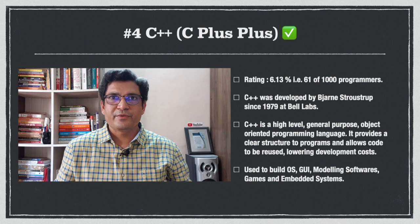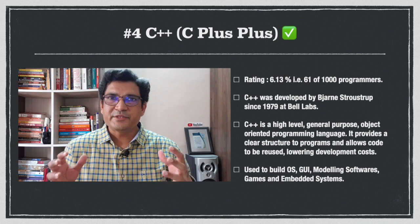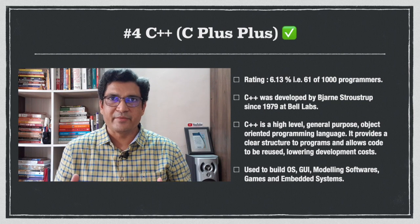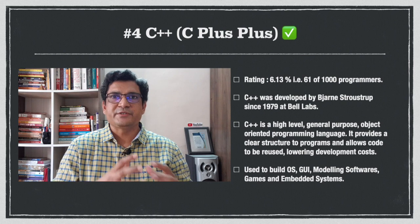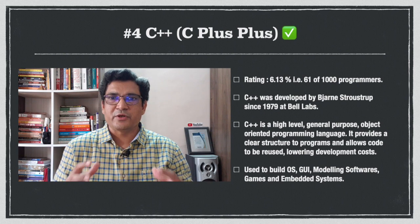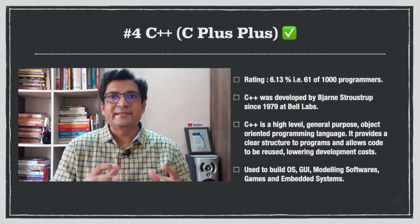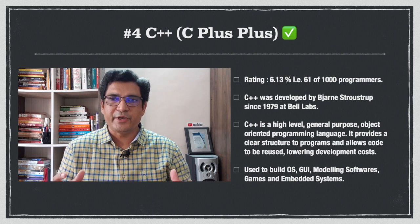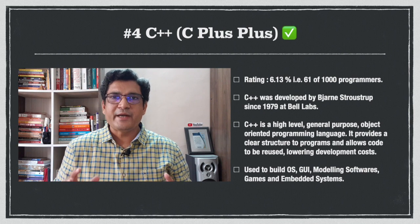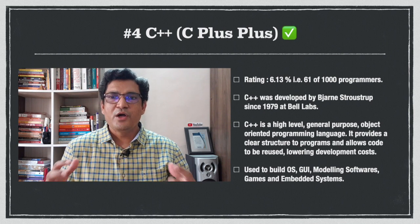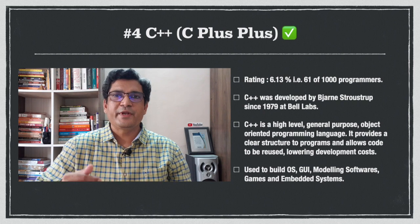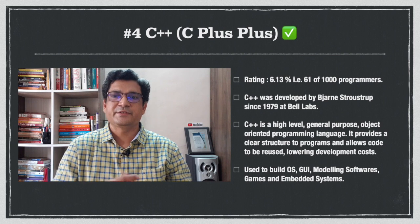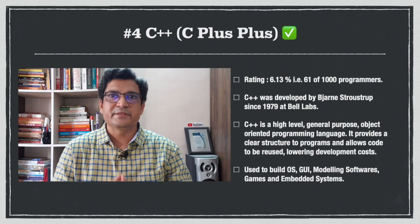At number 4 is C++, and you will be surprised that it is still one of the most popular programming languages. C++ was developed by Bjarne Stroustrup since 1979 at Bell Labs. C++ is a high-level, general-purpose, object-oriented programming language that provides a clear structure to programs and allows code to be reused, lowering development cost. It is used for building operating systems, graphical user interfaces, modeling software, games, and embedded systems.